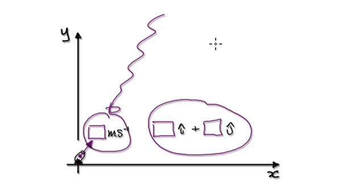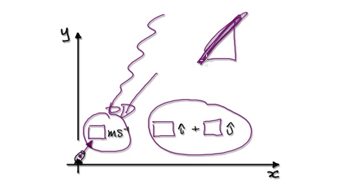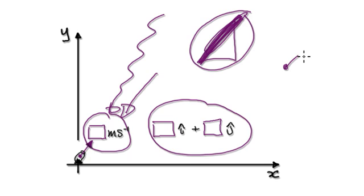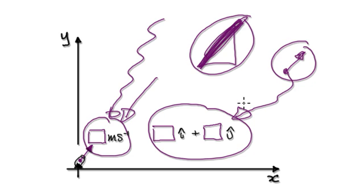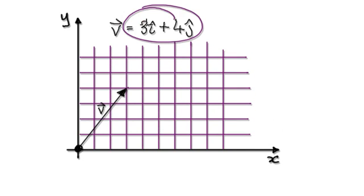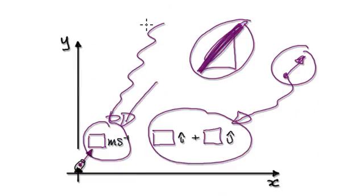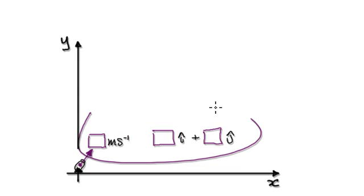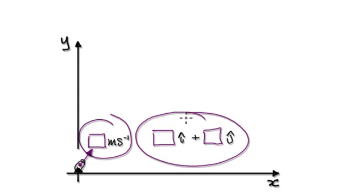Remember, velocity is really speed in a given direction. The speed happens to be the magnitude of your velocity. To obtain the direction, you would turn your velocity into a unit vector and from that you can extract the direction. So given your velocity vector here, specify it in this form where this is your speed and this is your direction.